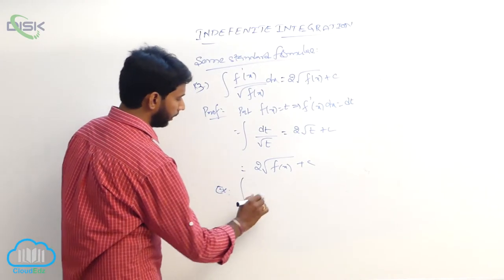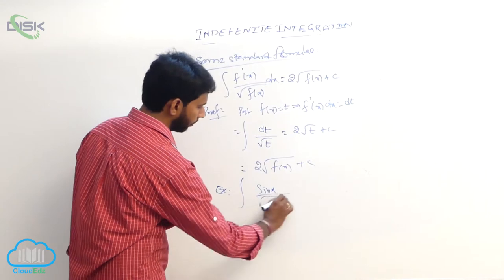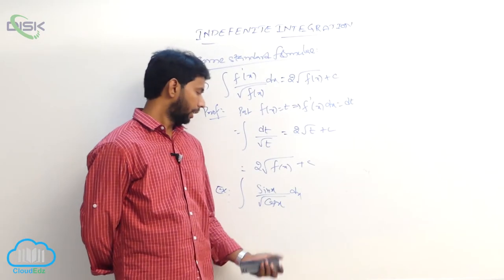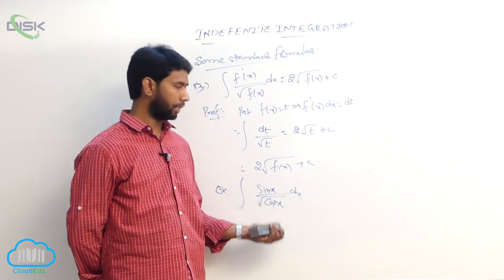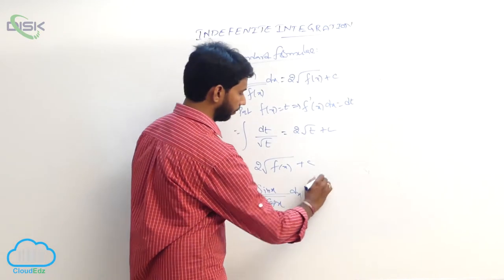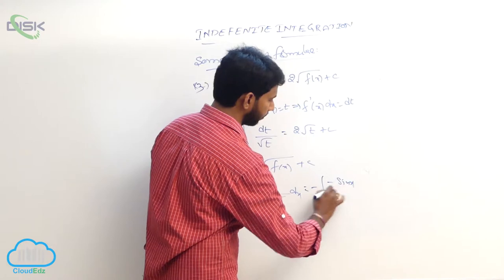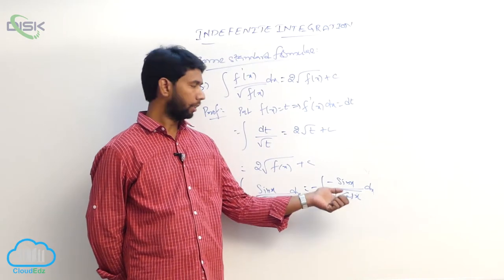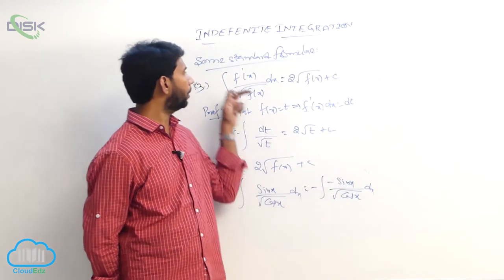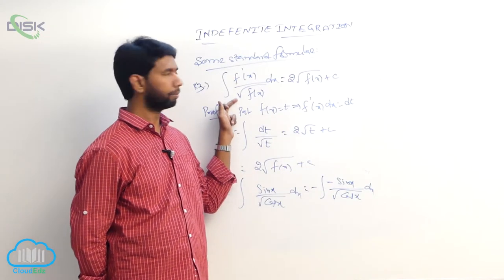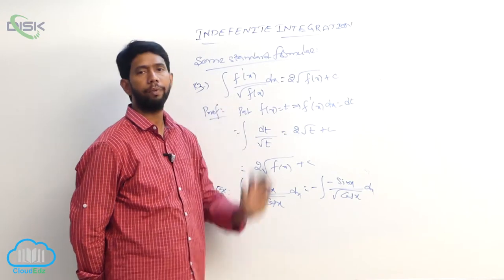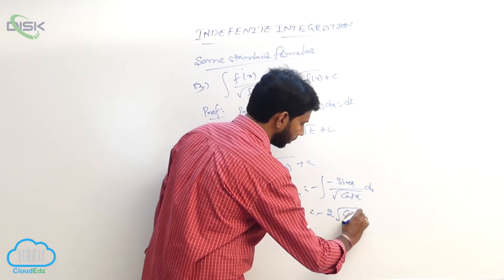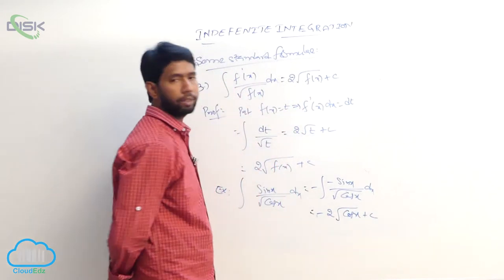Example: integral of sin x / √(cos x) dx. The derivative of cos x is minus sin x, so multiply and divide by minus 1, giving minus integral of (-sin x)/√(cos x) dx. With f(x) equals cos x and f'(x) equals minus sin x, applying the formula gives minus 2√(cos x) plus constant.